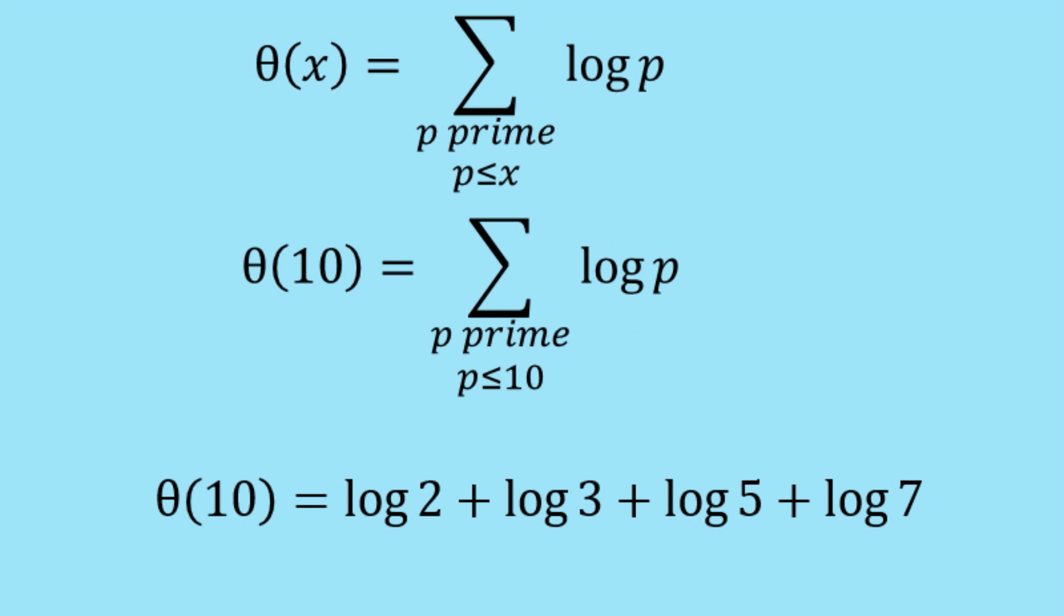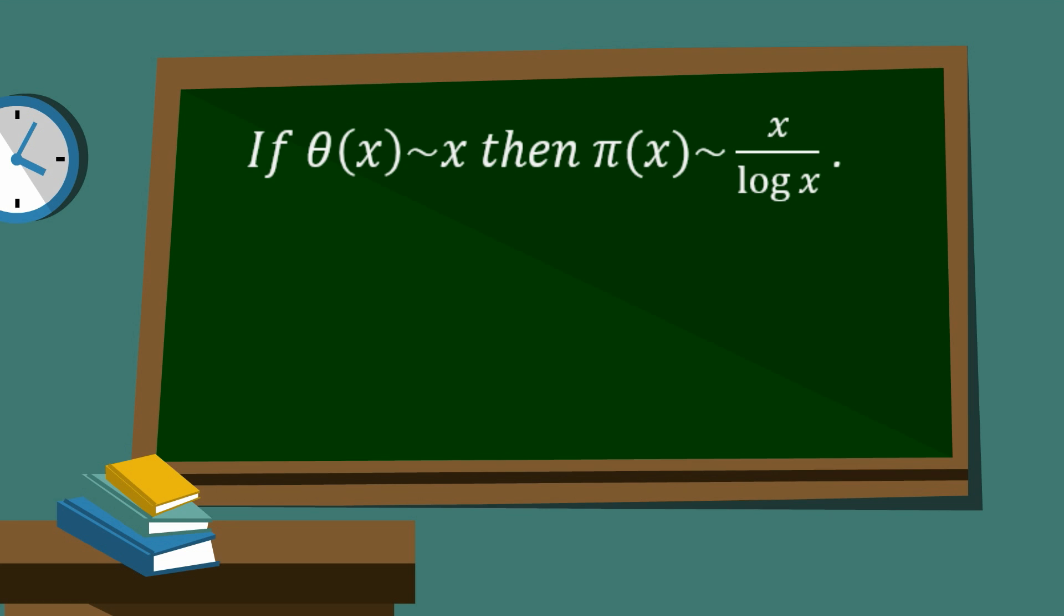So the first step in the analytic proof was that it was proven that if theta(x) is asymptotically equivalent to x, then in fact pi(x) is asymptotically equivalent to x on log x. So this immediately shows us where the log gets into this problem, which is about prime numbers, right at the first step. And I'll show you 95% of this proof at the end of the video, if you're interested. But if you're not, you don't need to stick around for it. So once it's proven this if then statement, then it's clear that it will suffice to just show that theta(x) is asymptotically equivalent to x. Because now the proof tells us that if that's true, then we've proven the prime number theorem. So now all that we need to do is prove that theta(x) is asymptotically equivalent to x.